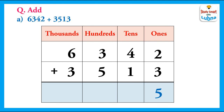After this, we will add the tens. 4 plus 1 equals 5. We write 5 in the tens column. Now we will add the hundreds. 3 plus 5 equals 8. We write 8 in the hundreds column. After this, we will add the thousands. 6 plus 3 equals 9. We write 9 in the thousands column.